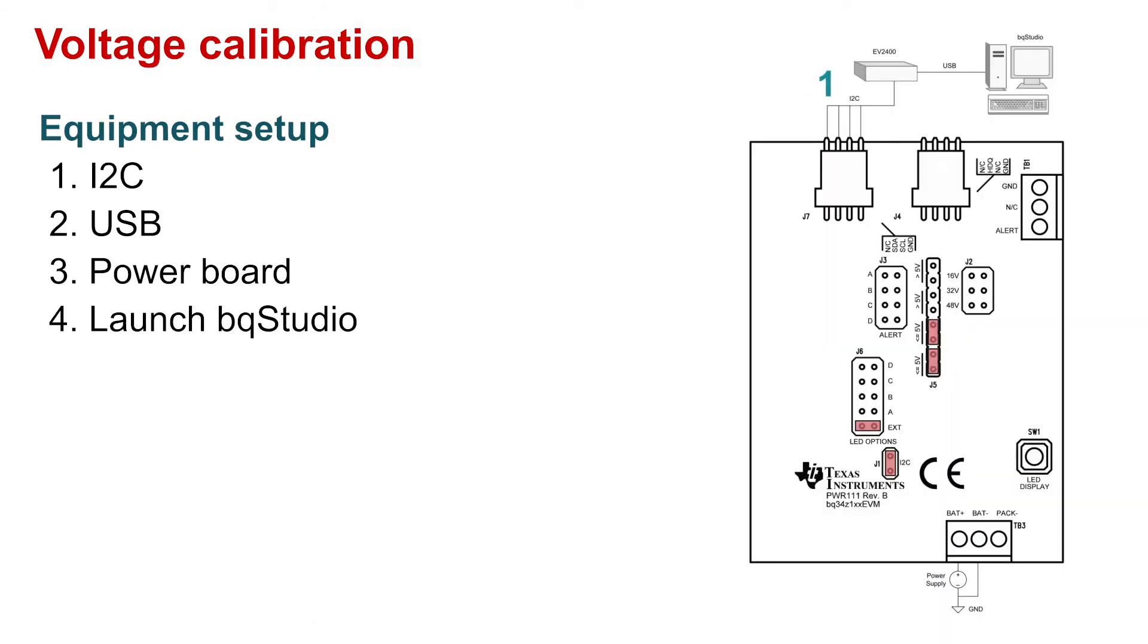Let's set up our device. Connect the keyed 4-wire cable to port 2, the I2C connector on the EV2400, and to J7, the I2C connector on the evaluation module. Connect the USB cable to the EV2400 and the computer. Connect your power supply to the bat plus and bat minus terminals on the evaluation module. Slowly increase the voltage supply to the operational voltage your board is configured to support.